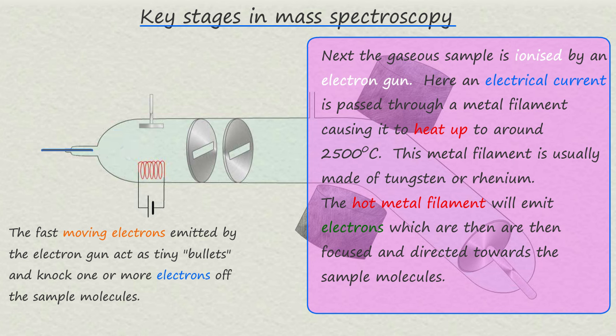The metal filament is usually made of a metal such as tungsten or rhenium. This hot metal filament will emit electrons which are then focused and directed towards the sample.